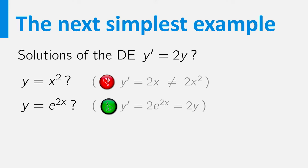Do you see how you can vary this function to find other solutions? In this case, adding a constant c doesn't work. The derivative of e to the 2x plus 5 equals 2 times e to the 2x, and this is not equal to 2 times e to the 2x plus 5.